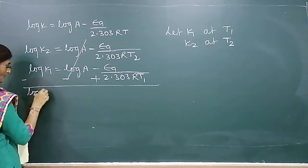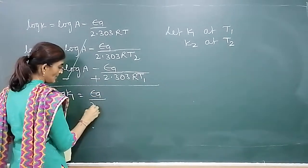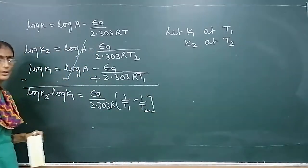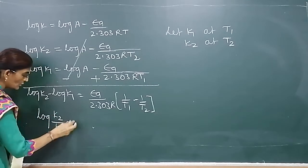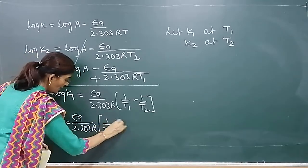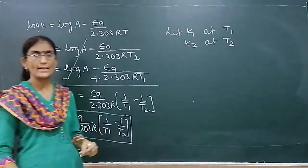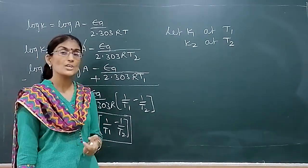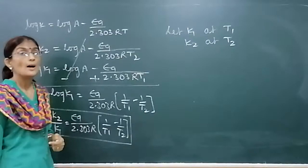After subtraction: log K2 − log K1 equals Ea/(2.303R) × (1/T1 − 1/T2). This can be written as: log(K2/K1) = Ea/(2.303R) × (1/T1 − 1/T2). Here K2 is the rate constant at temperature T2, K1 is the rate constant at temperature T1, and T1, T2 are absolute temperatures. Ea is activation energy and R is the gas constant.